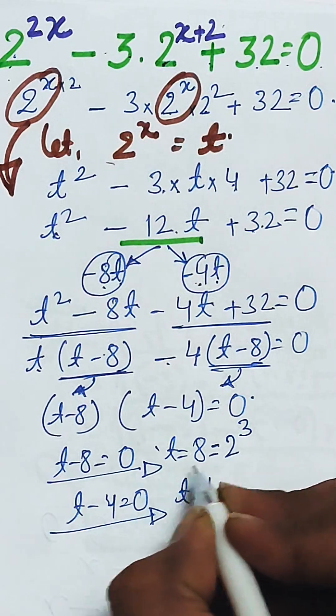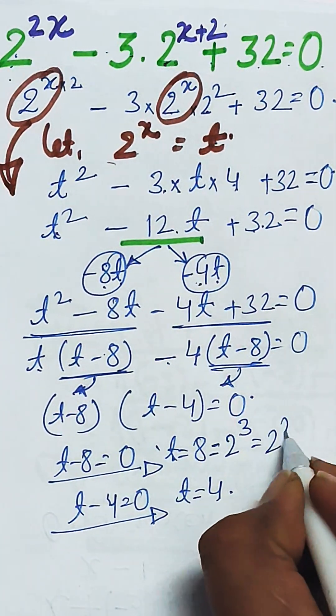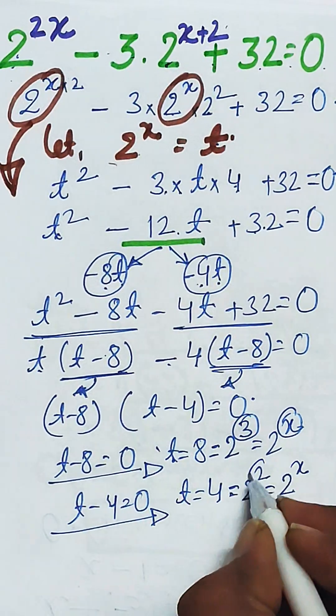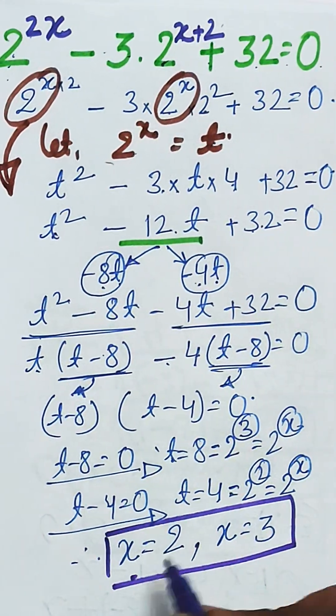8 can be written as 2 to the power 3, and basically t is 2 to the power x. So this will give you x equal to 3, and from below x equal to 2. So in this way the value of x is 2 and 3.